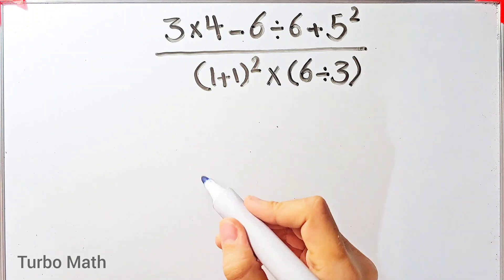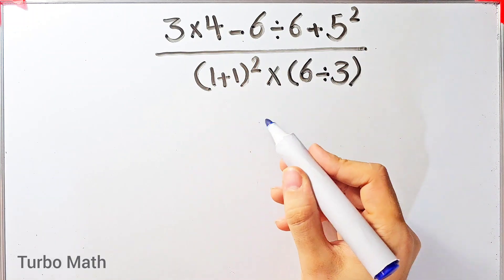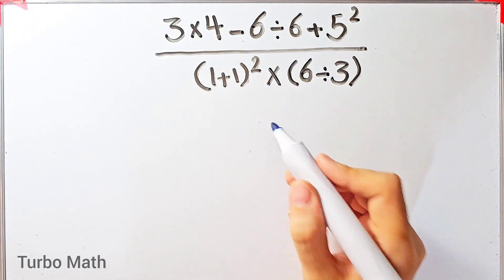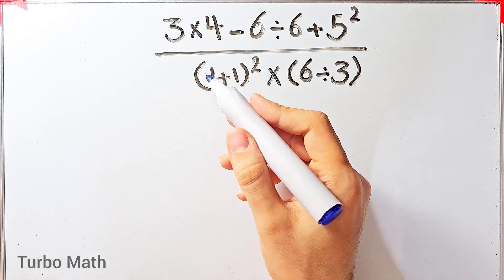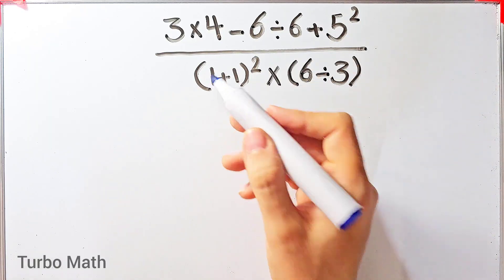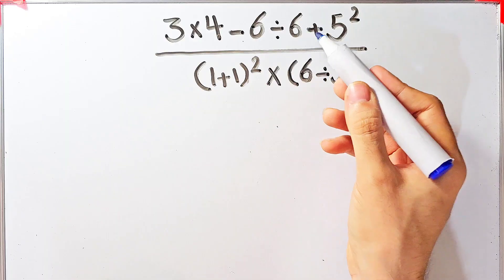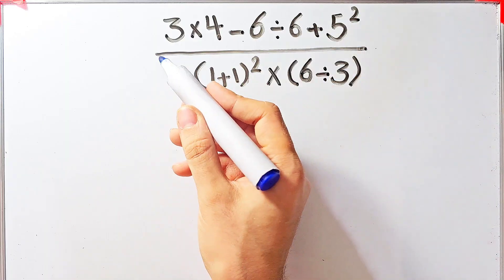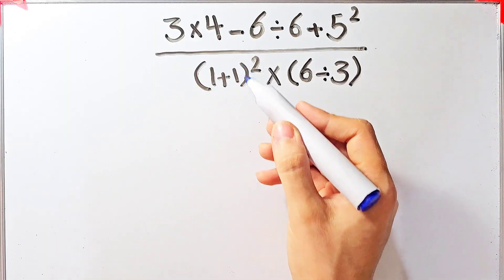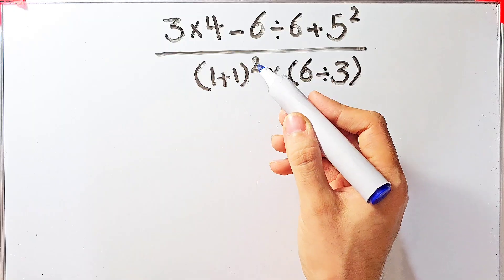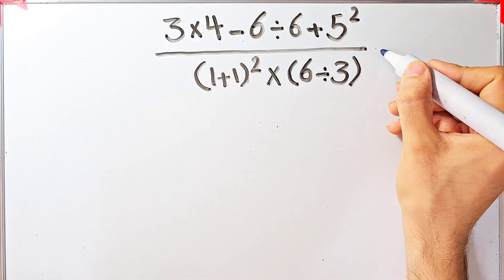Hi guys, welcome to Turbo Math channel. A lot of people get confused when they see this question — they don't know which operation to do first. The question is: three times four, minus six divided by six, then plus five to the power of two, then over open parentheses one plus one close parentheses, all of them to the power of two, times six divided by three.